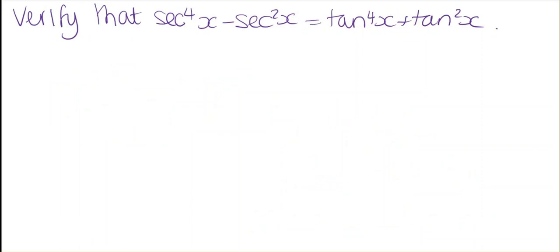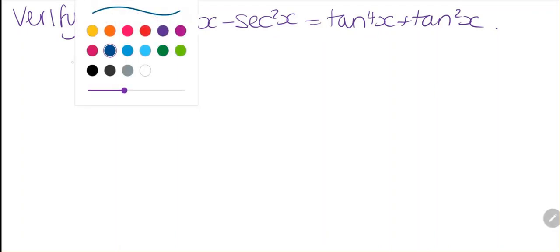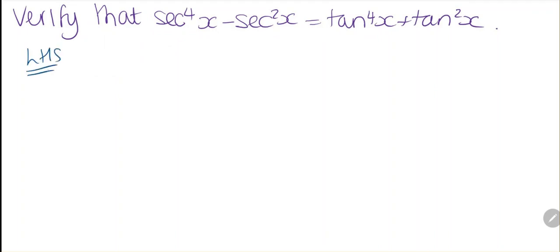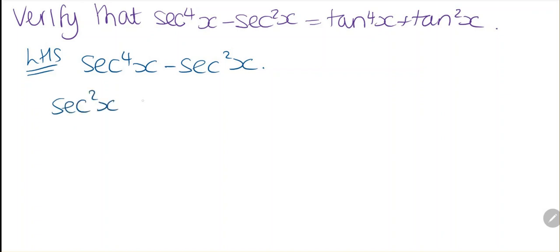Now we need to verify this second identity. We can see that we have terms which are to the power of two or to the power of four, so we're going to factor and see what we can do. Looking at the left hand side, we have secant⁴x minus secant²x. We can factor out secant²x, and this will leave us with secant²x minus one.